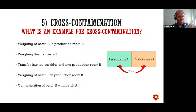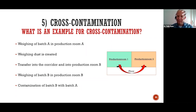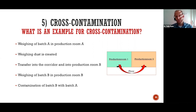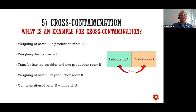Raw material A, which was being weighed in production room one, cross-contaminates product B from weighing room two. That's a cross-contamination between these different products, these two raw materials. The guideline says this is not acceptable, this is of high risk — you have to establish cross-contamination prevention concepts.